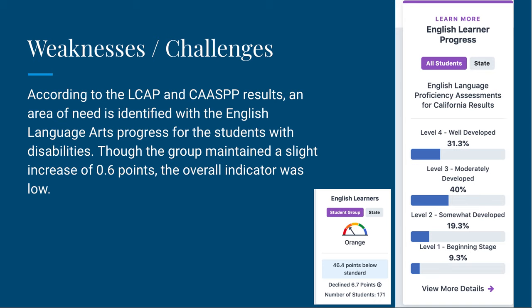Moving on to the weaknesses or challenges for the Norris District. First is in regards to English language learners. Previously I mentioned that there was only 4.2 percent of English language learners in the district as a whole, and this group has scores in the orange range, landing them 46 points below standard — with only 31 percent of them being well developed. I'm curious if this is due to the low percentage of ELL students in the district meaning they're not getting the full attention they need. However, I did read in the LCAP that the district is now focusing on professional development courses for teachers and resource teams specifically geared towards English language learners and how to help them achieve higher scores.